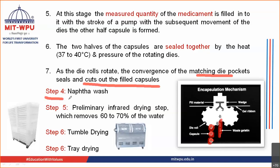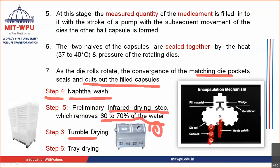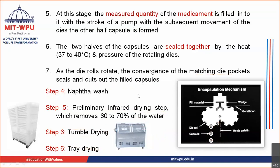After the filling step, the capsules are washed with naphtha. Then drying is performed in multiple steps: first, infrared drying removes approximately 60 to 70 percent of water; next, tumble drying is carried out where capsules move through a tumble dryer; finally, tray drying completes the drying process. These are the drying steps following the naphtha wash.